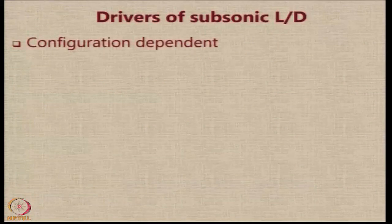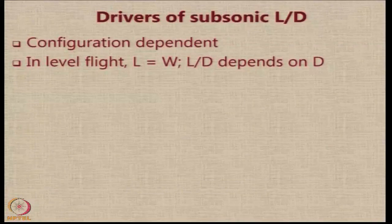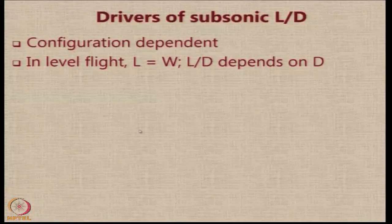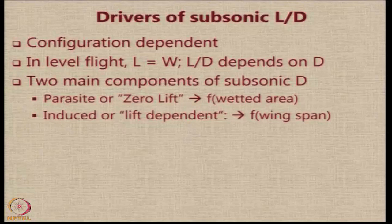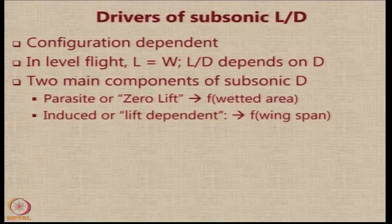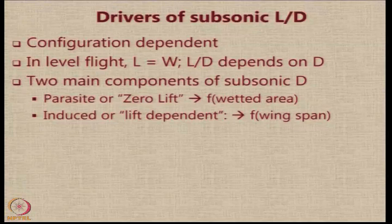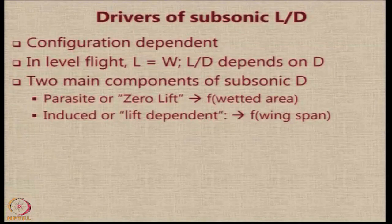Let us understand what are the drivers of subsonic L/D. The subsonic value of L/D is very strongly dependent upon the aircraft configuration. In level flight, lift is equal to weight, and hence the L/D will depend mostly on D because L is almost constant. For subsonic aircraft, there are two main components of drag: one is the parasite or zero-lift drag, which is a function of the wetted area of the aircraft, and the other is the induced or lift-dependent drag, which is a function of the wingspan — because it is a function of aspect ratio, which is span squared divided by area.